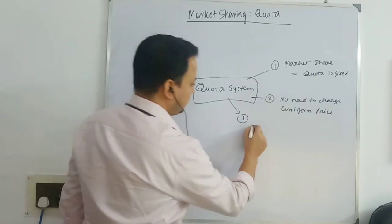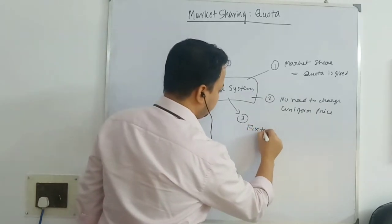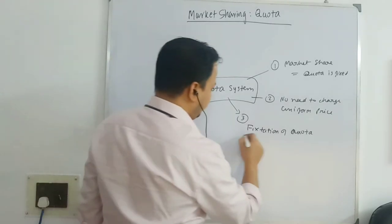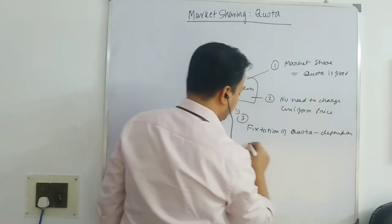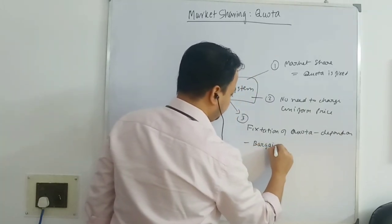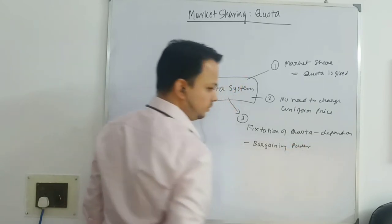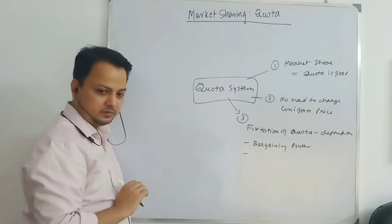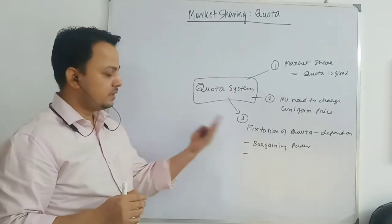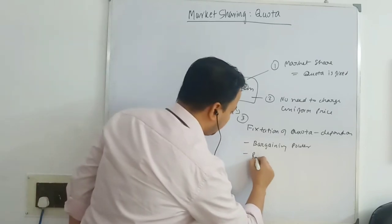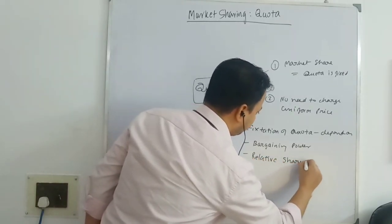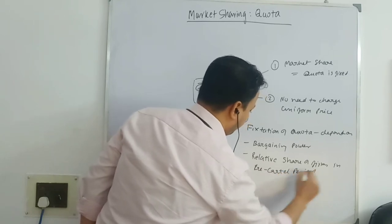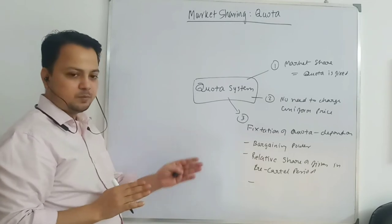The problem here is how we are going to fix the quota. Fixation of quota is a problematic thing and it depends on three things: first, the bargaining power or strength of the firm; second, how much output that firm is producing in the pre-cartel period — the share of that firm before the agreement is formed; and third, the base share production capacity.